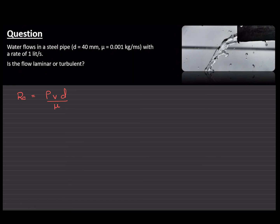Well, for that, we can use the equation for flow rate, which says Q equals V A. That means flow rate of the fluid is equal to the velocity times the cross-sectional area through which the fluid is flowing.